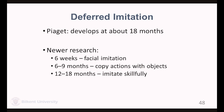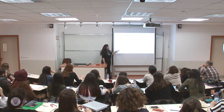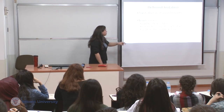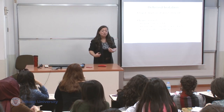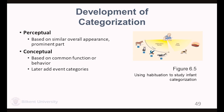Newer research also indicates with deferred imitation that there is facial imitation as early as newborns, and up to six weeks. Six to nine months, they copy actions with objects. Twelve to eighteen months, they imitate skillfully. So there seems to be some preliminary evidence for mental representations before Piaget claimed they were possible. Another line of evidence used to criticize Piaget's substages of infancy is about categorization.